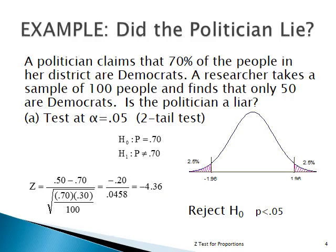Here's a good example of when to use the test of a proportion. A politician claims that 70% of the people in her district are Democrats — that's a proportion, not a mean. You take a sample and find P-sub-s equals 50 out of 100, which is 50%. The question is: is that 50% far enough away from the claimed 70%? It could be sampling error, so we convert the sample evidence into a Z-score to find the probability.